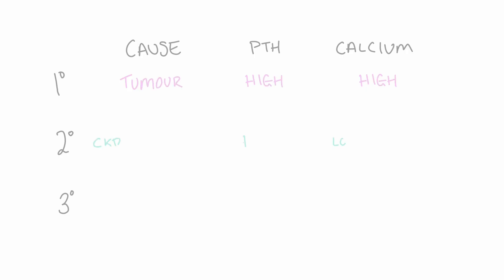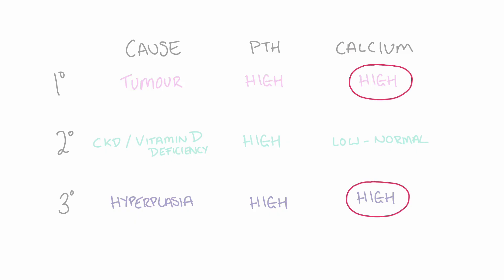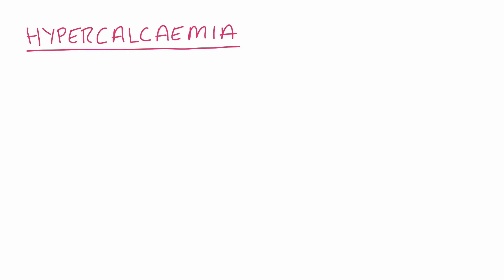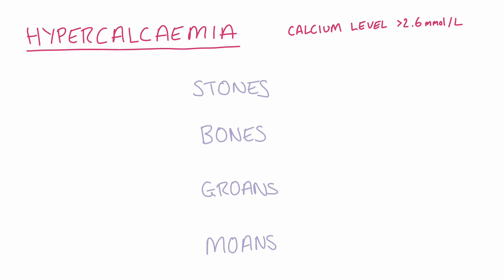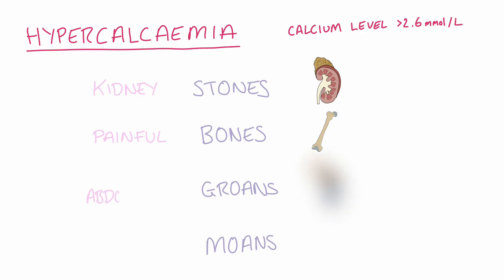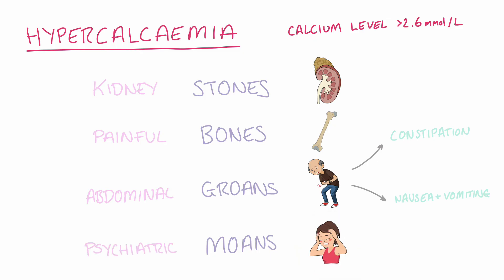Let's take a look back at the similarities and differences between primary, secondary, and tertiary hyperparathyroidism. Primary and tertiary hyperparathyroidism both result in hypercalcemia — where calcium levels are above 2.6 millimoles per litre. The symptoms of hypercalcemia can be easily remembered through the phrase stones, bones, groans, and moans, which stand for kidney stones, painful bones, abdominal groans (meaning constipation, nausea, or vomiting), and psychiatric moans (referring to depression or psychosis).